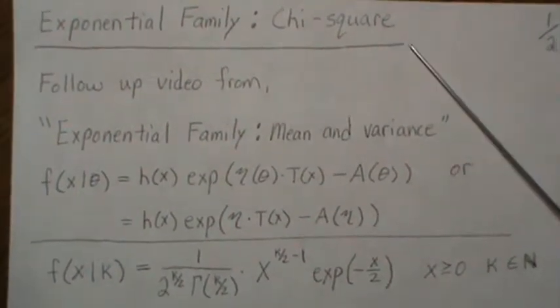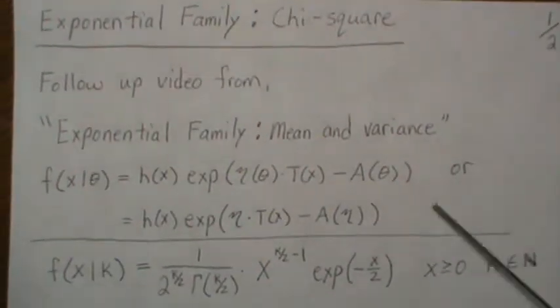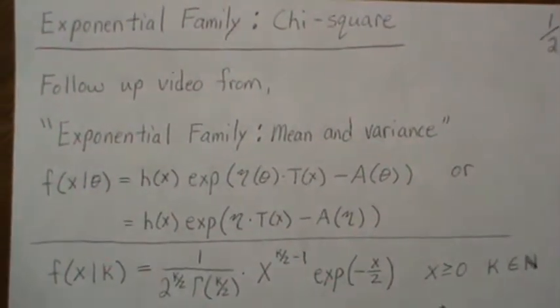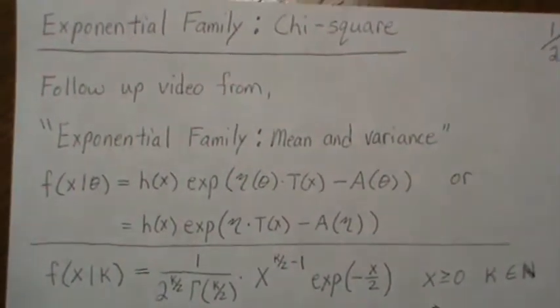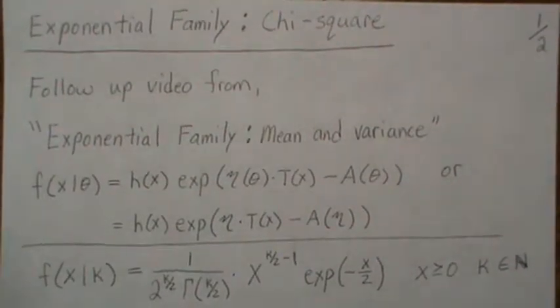So let's show that the chi-square can be written in these forms, and then we'll find the mean and the variance of the sufficient statistics.